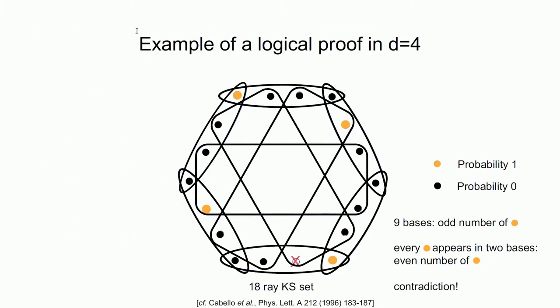Here's an example of a logical proof. The vertices are four-dimensional projections consisting of 18 vectors carved into nine different measurements. You cannot define map C that assigns each vertex a value of zero or one such that assignments add up to one for each measurement basis. There are nine measurements, so you need at least nine assignments of one; but each projection appears in two bases, meaning the number of ones must be even. An odd number cannot equal an even number — contradiction. So map C doesn't exist.